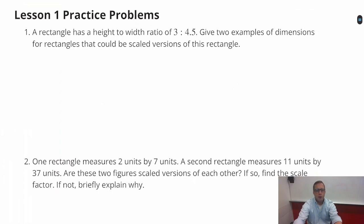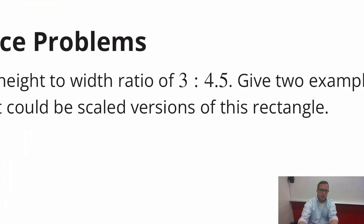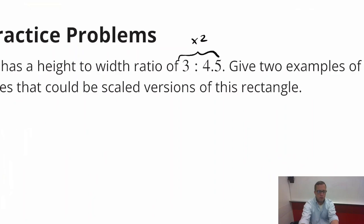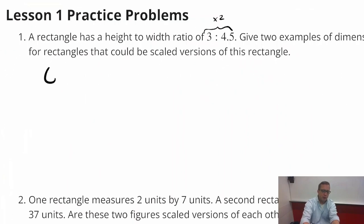The first one is about a rectangle and it has a height to width ratio of three to four and a half. Give two examples of dimensions for rectangles that could be scale versions of this rectangle. So the first thing that comes to mind is if you just take those numbers and just multiply by two. If you just multiply by two you end up with, well, three times two is six and four and a half times two, four and a half doubled is nine.